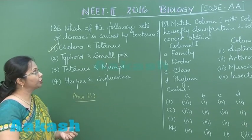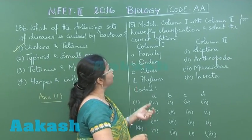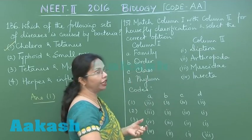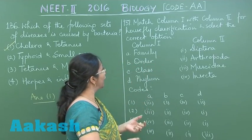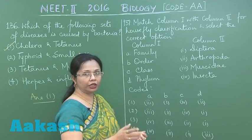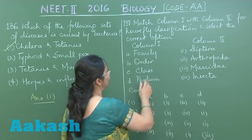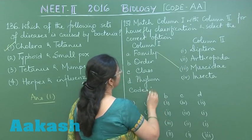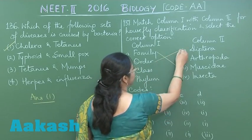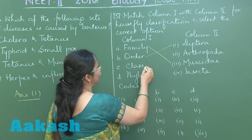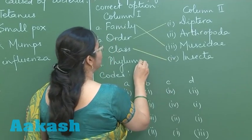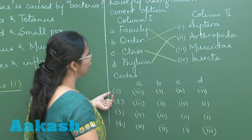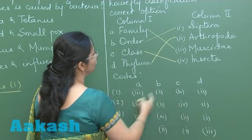Moving on to question 137, we have to match two columns to get the correct classification of housefly, that is Musca domestica. Housefly is an insect, and insects belong to phylum Arthropoda. The family is Muscidae, order is Diptera because they have only two wings, class is Insecta, and phylum is Arthropoda. So it is option number one where all four matches are correct.